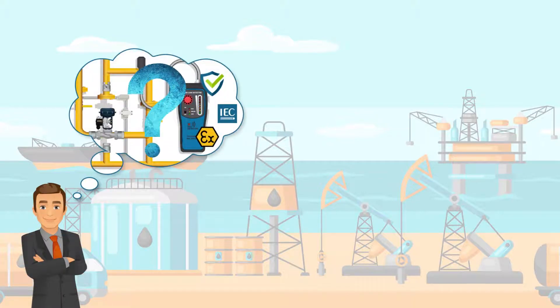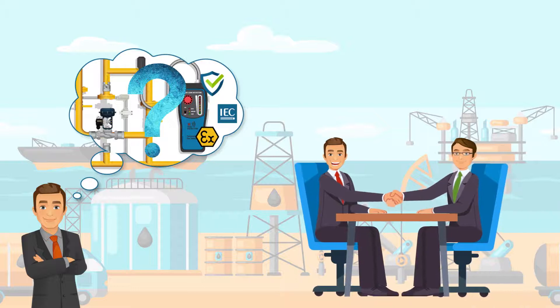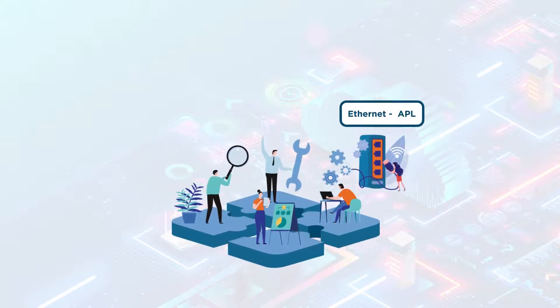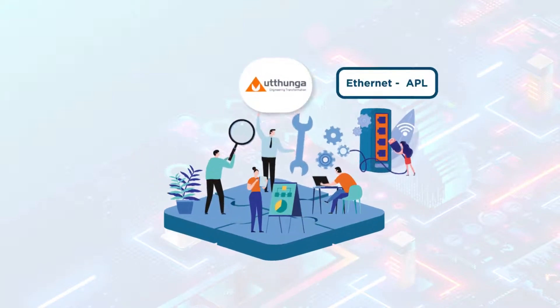John needs to find a partner to help him meet these requirements. That is when he found UTUNGA. After a comprehensive study, UTUNGA recommended adopting the Ethernet APL technology, one solution to meet all his needs.